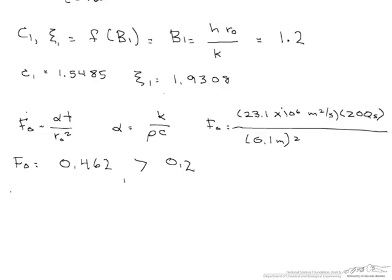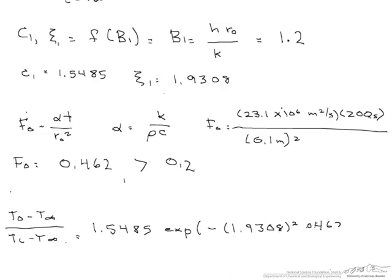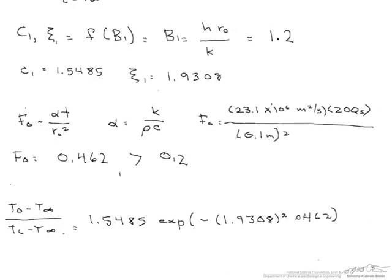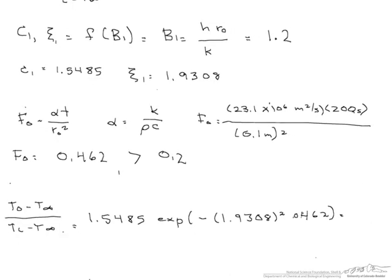So our T0 minus T infinity divided by our initial temperature minus T infinity equals 1.5485 exponential of negative 1.9308 squared times 0.462. And when we calculate that out, this equals 0.277.